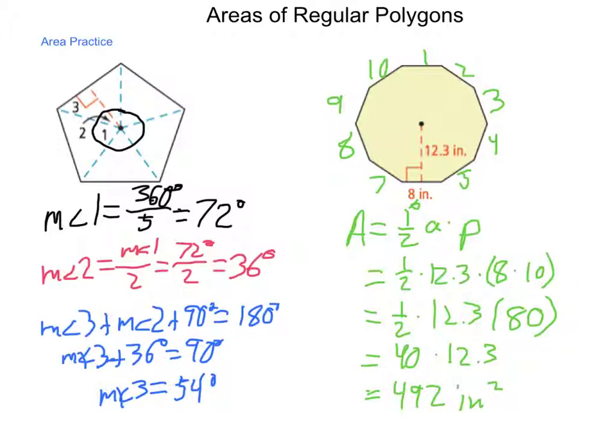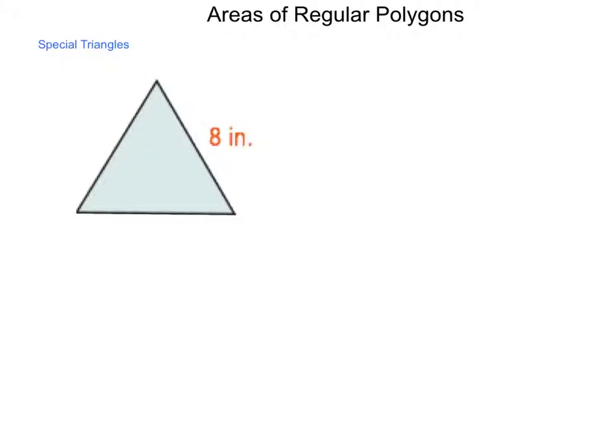Now, we can also use the information we know about special right triangles, such as our 30, 60, 90, and 45, 45, 90, to occasionally find missing side lengths. So let's take a look real quick at that. Here I have a regular triangle, also known as an equilateral, and all I'm given is that the length of one side is eight.